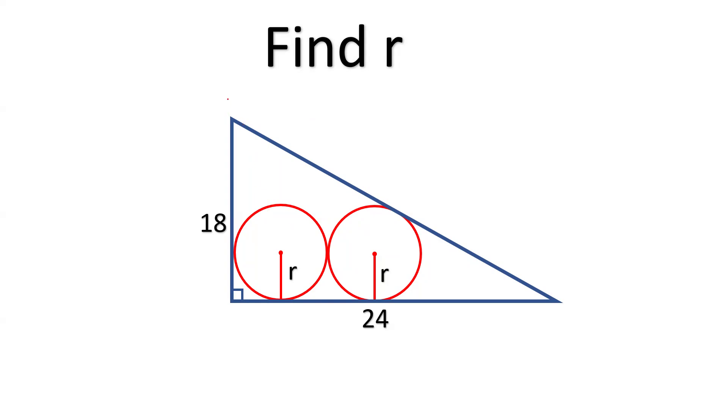There is a right angle triangle. Let's say the name of the triangle is ABC. Inside triangle ABC, there are two circles of equal radius R. Side AB is 18, BC is 24. You have to calculate the radius of these two circles.